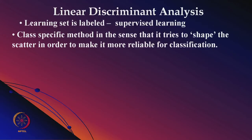LDA is a class-specific method that tries to shape the scatter to make it more reliable for classification. In PCA, we find directions of maximum scatter across the entire data. In LDA, we want to maximize class separability — for a two-class problem, we find a direction that maximizes between-class separation.